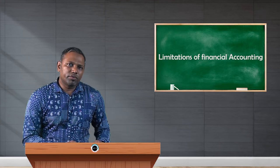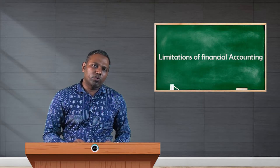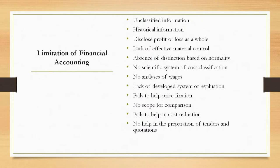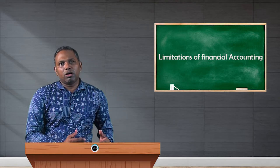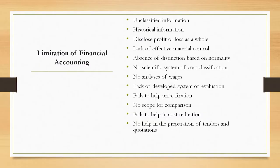Now, after understanding the merits and demerits of cost accounting, let's understand why we need a cost accounting system when we already have a financial accounting system. Financial accounting cannot provide all the data required by management to take proper decisions at the right time. The main objective of any organization is to maximize profit by minimizing cost, but cost data is not always available in financial accounting. In financial accounting, we have information related to expenditures incurred by the organization, but we cannot go deep into it to identify where we are spending necessarily or unnecessarily, and we cannot identify the cost of each product or activity.